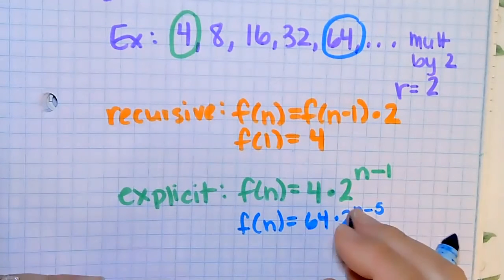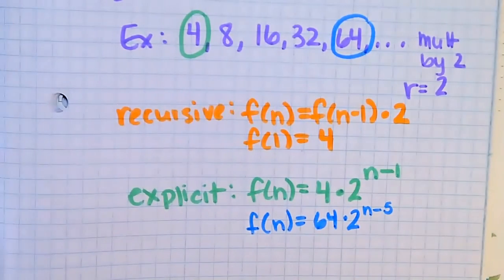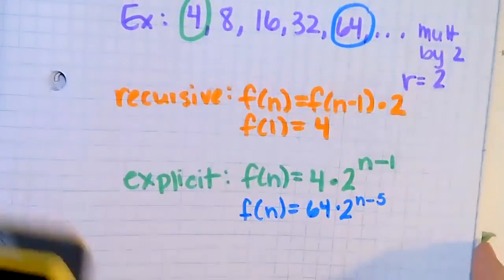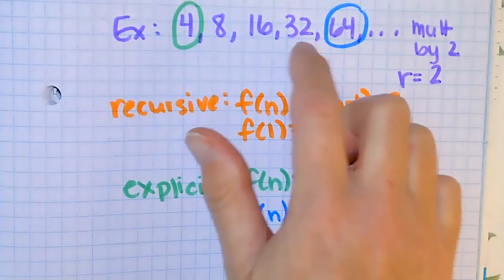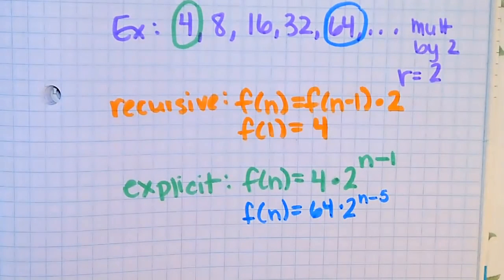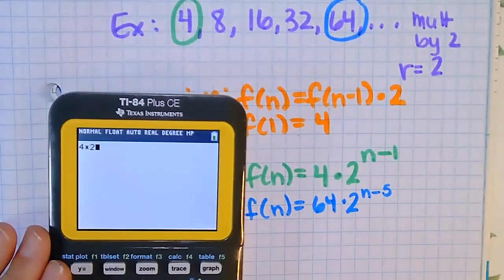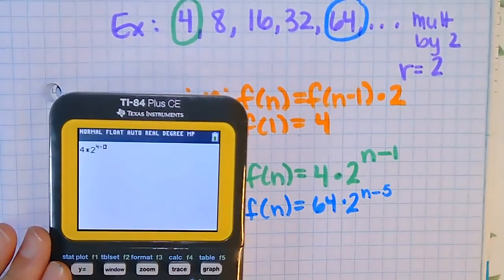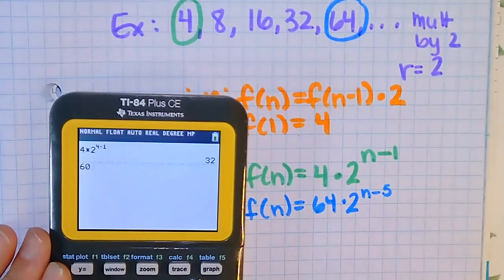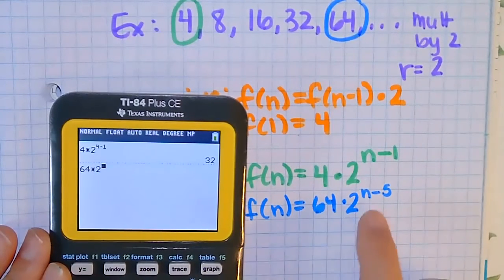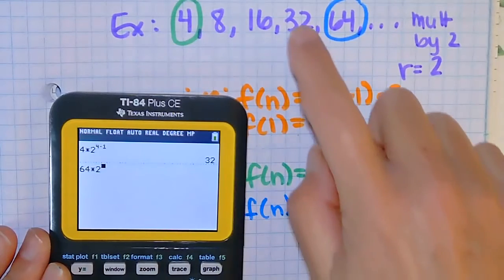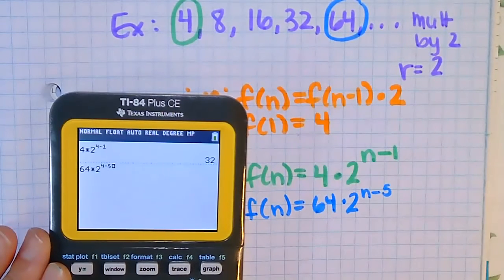They don't look the same, but if I put in a number I'm going to get the same result. Let's say I want the fourth term, which should be 32. I'll put it into both equations. Four times two raised to the power four minus one — I get 32. And 64 times two raised to four minus five — I also get 32. You get the same answer.